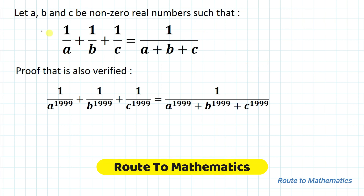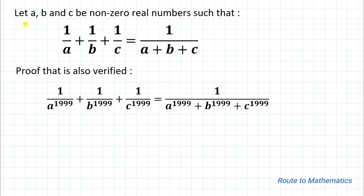Hello everyone, welcome to Root 2 Mathematics. In this video we're going to solve an interesting algebraic question. The given question is: let a, b, and c be non-zero real numbers such that 1/a + 1/b + 1/c = 1/(a+b+c). Prove that 1/a^1999 + 1/b^1999 + 1/c^1999 = 1/(a^1999 + b^1999 + c^1999).